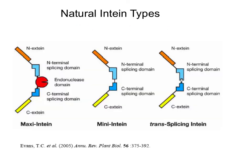Here are the natural types of intein: a maxi-intein, which has two exteins, an N-terminal splicing domain, and a C-terminal splicing domain with the endonuclease; a mini-intein, which lacks that endonuclease domain; and a trans-splicing intein, where you have a C-terminal and N-terminal splicing domain that, when brought together, undergo intein splicing.